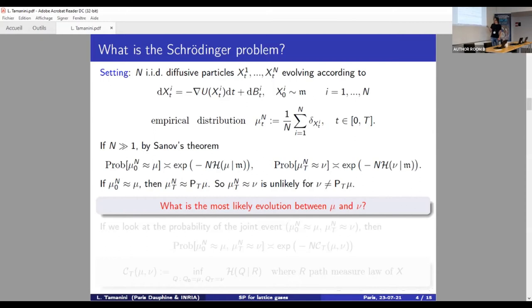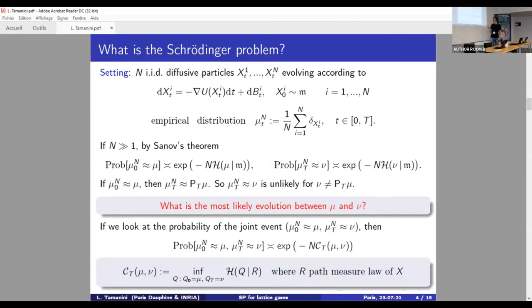So what is the most likely evolution between μ and the unexpected final configuration ν? And to answer this question, well again by Sanov-like arguments, we can look at the joint event, consider its probability, and prove that this probability is again exponentially small. But this time, the function that determines the smallness of the probability is no longer the Boltzmann entropy, is something more complicated, is the optimal value of this minimization problem, which is the Schrödinger problem. So it is an entropy minimization problem where we minimize the Boltzmann entropy among all path measures with good initial and final marginals.